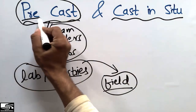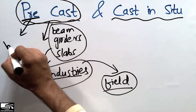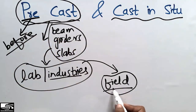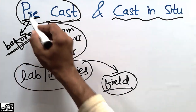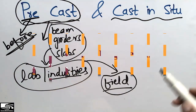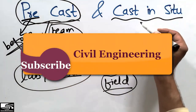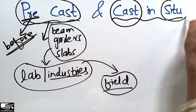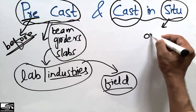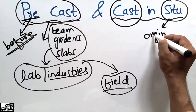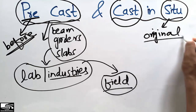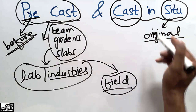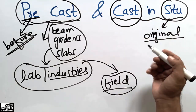The prefix 'pre' means 'before,' indicating that these members are made before being brought to the field — that is why they are called precast. 'Cast-in-situ,' on the other hand, means they are cast in their original position. 'Situ' means original condition or original place.